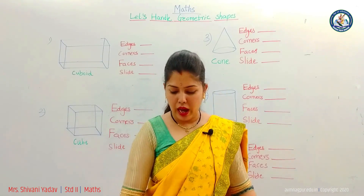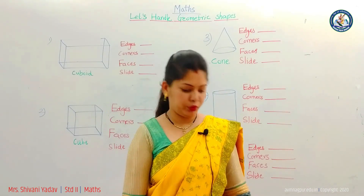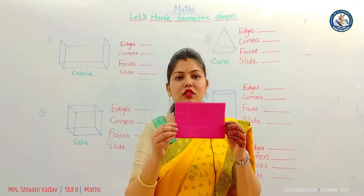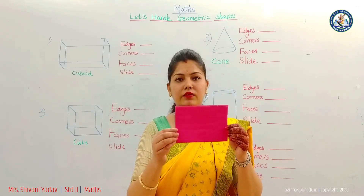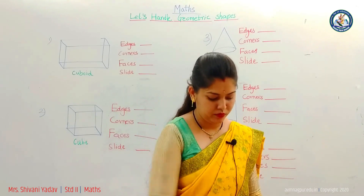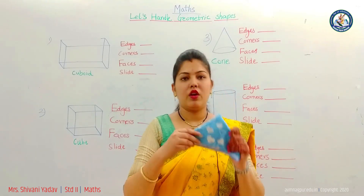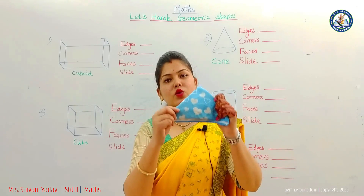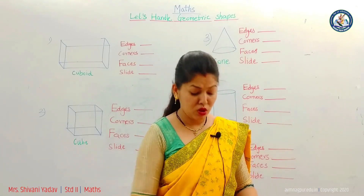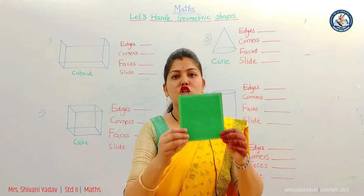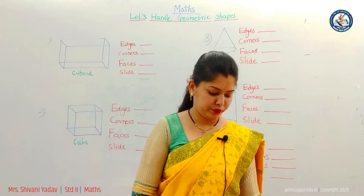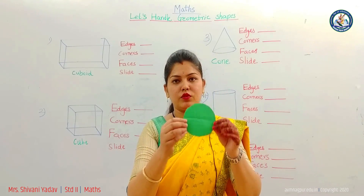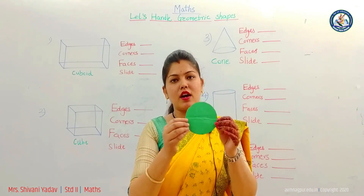Now I am showing the pictures to you. Rectangle — this is a rectangle. Triangle — which shape is this? This is a triangle. Square — this is a square shape. And this is a circle. What is this? This is a circle.